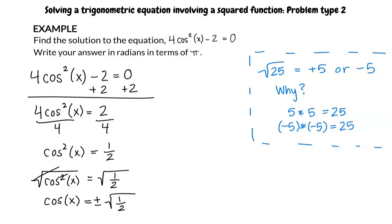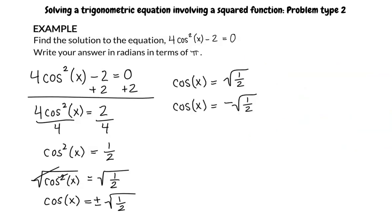In a like manner, 1 half has 2 square roots, positive square root of 1 half and negative square root of 1 half. So, the two values for cosine of x are square root of 1 half and negative square root of 1 half.